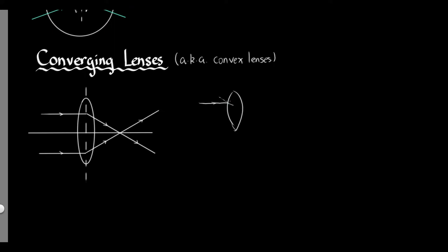So it's going to bend towards the normal on entry. And then when it exits the lens, it's going to bend away from the normal. So before, it was kind of going straight from left to right, parallel to the paper. But then it kind of went down. The same thing happens if you shoot a ray from the bottom of the converging lens — it's going to come up, and eventually these two rays would meet somewhere.